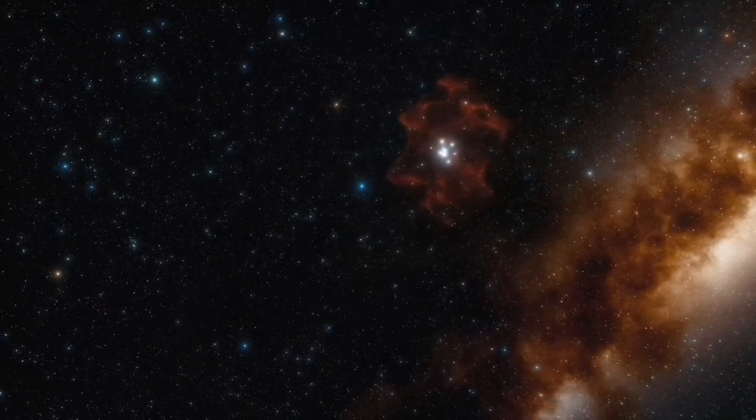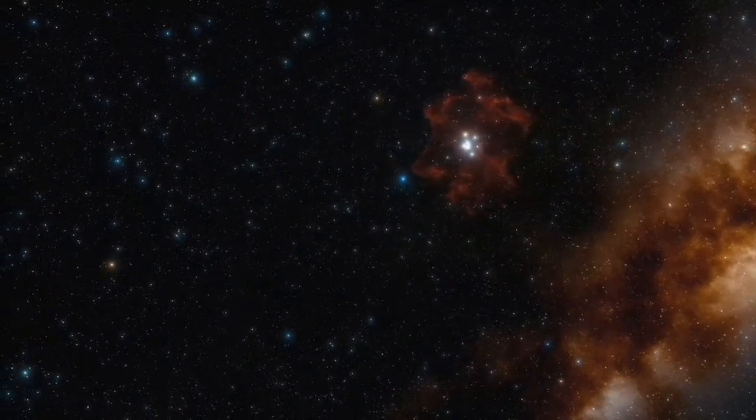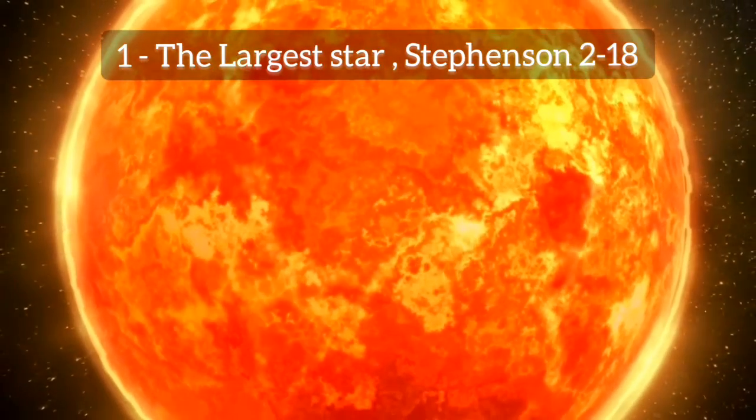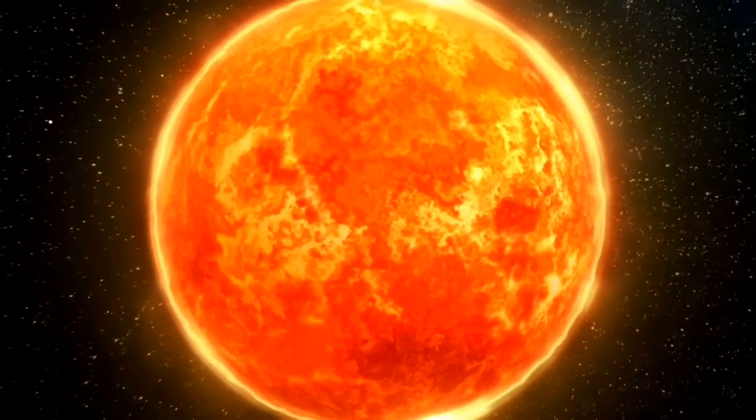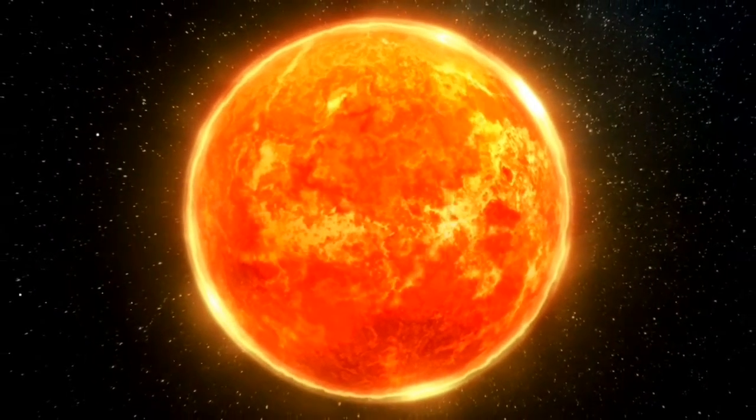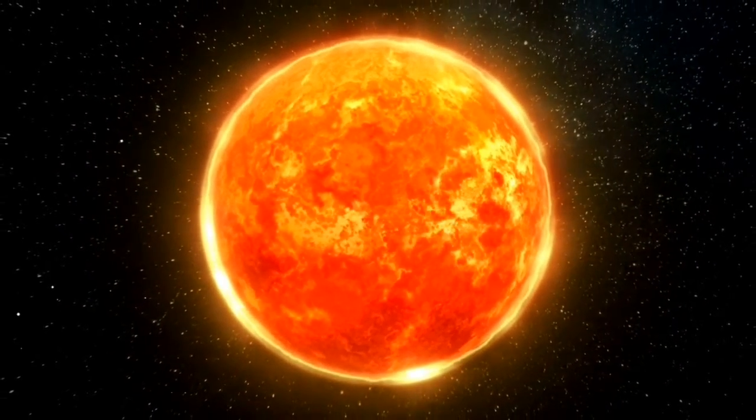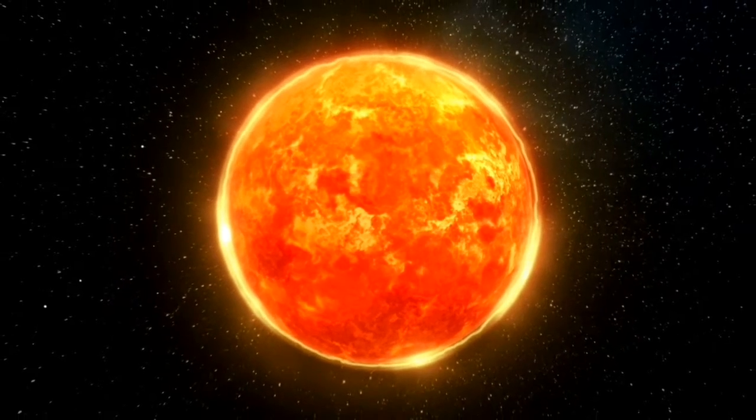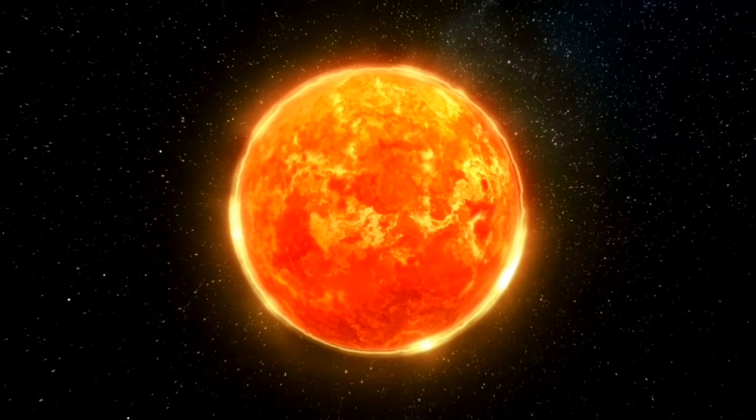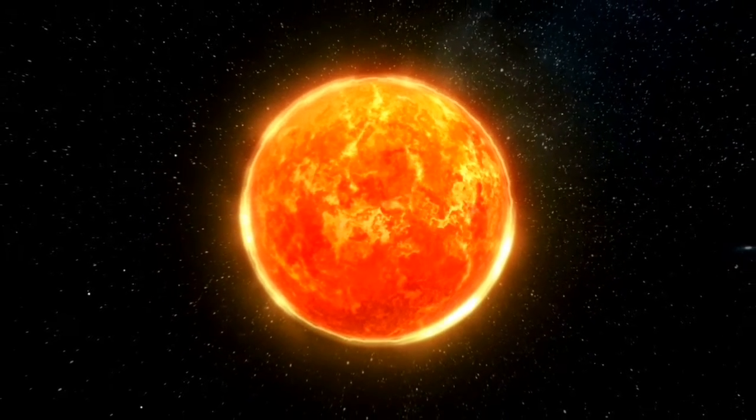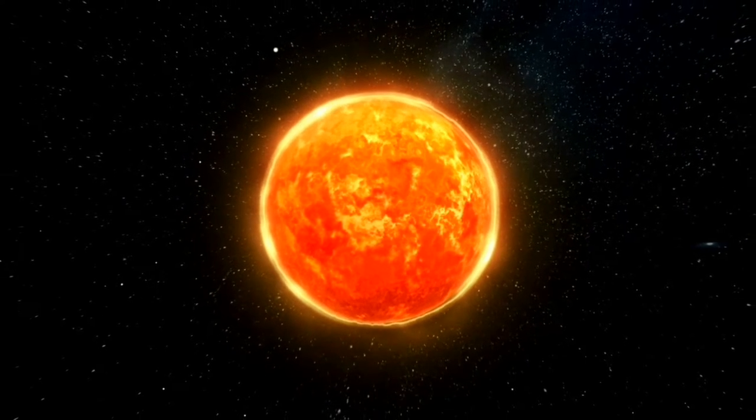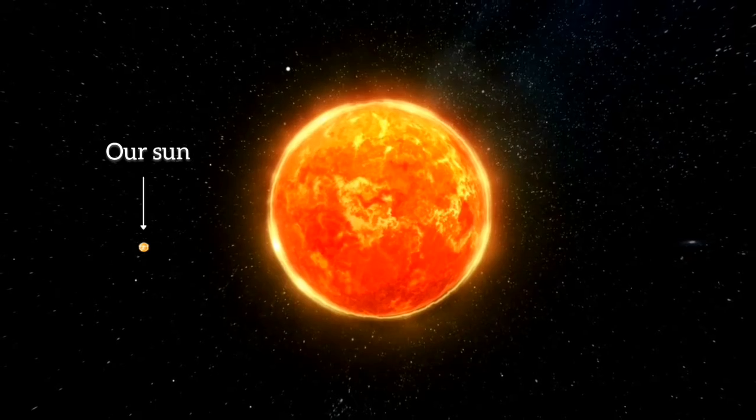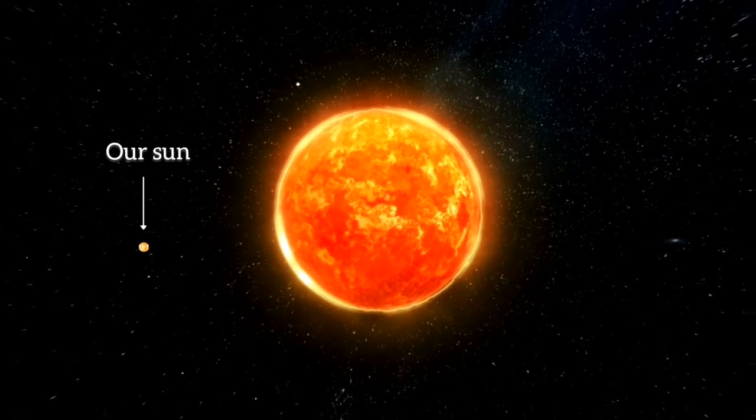So let's start. Stevenson 2-18 is a red supergiant located in the constellation Scutum. It is the current record holder for the largest star known. The star is located at a distance of 18,900 light-years from Earth. It is also one of the most luminous red supergiants, with an estimated radius around 2,200 times that of our Sun, which corresponds to a volume nearly 10 billion times that of the Sun.